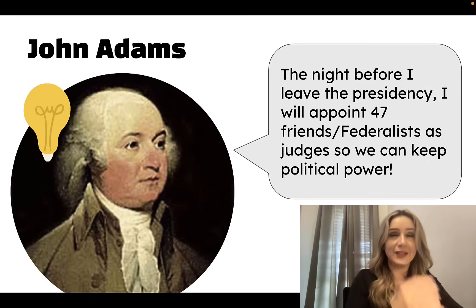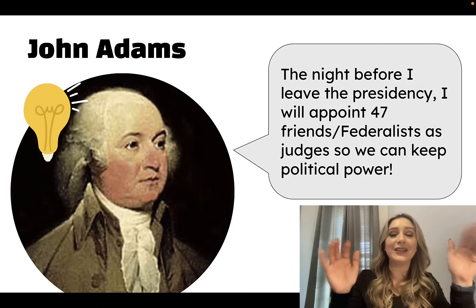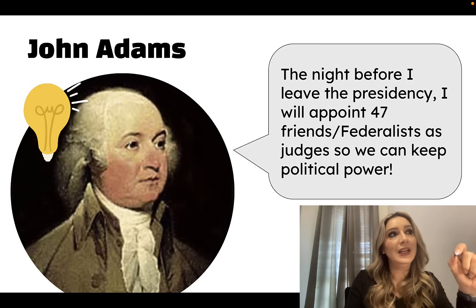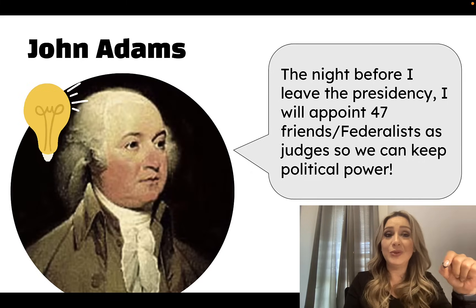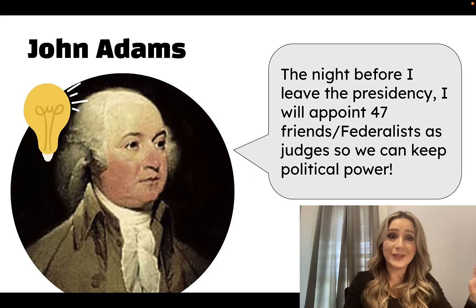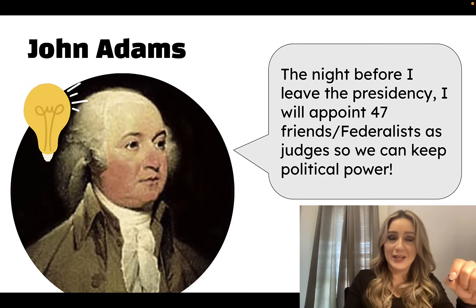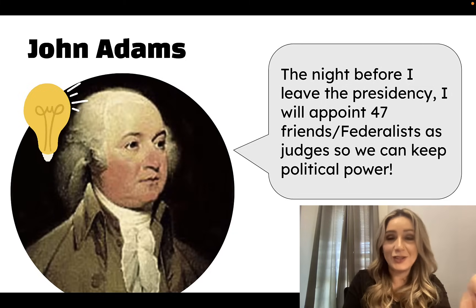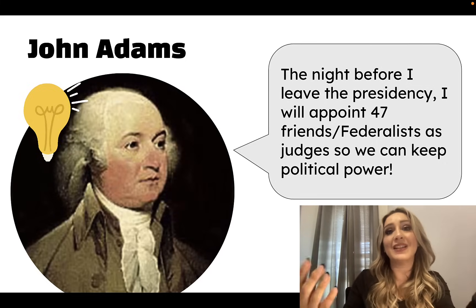Adams decides he has a great plan. As president, he still has the power to appoint judges. He's going to get 47 of his friends and assign them to be judges - 47 Federalists in power. It's obviously very shady what he does. So he starts writing these appointments, which are also known as commissions.